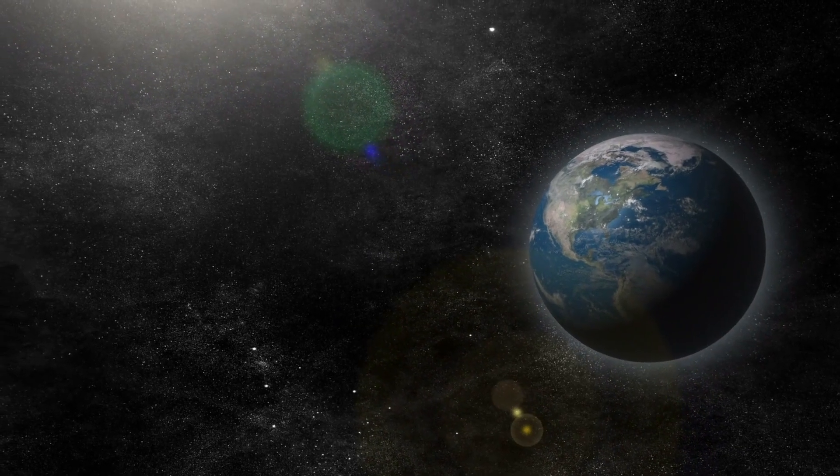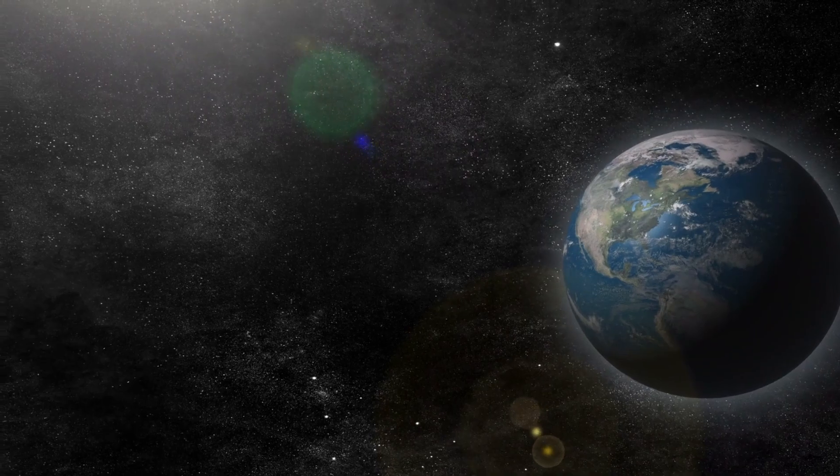Yeah, the closest star system to us, Proxima Centauri, actually has a fairly Earth-like planet around it. We don't know quite how Earth-like it is. It's called Proxima b.